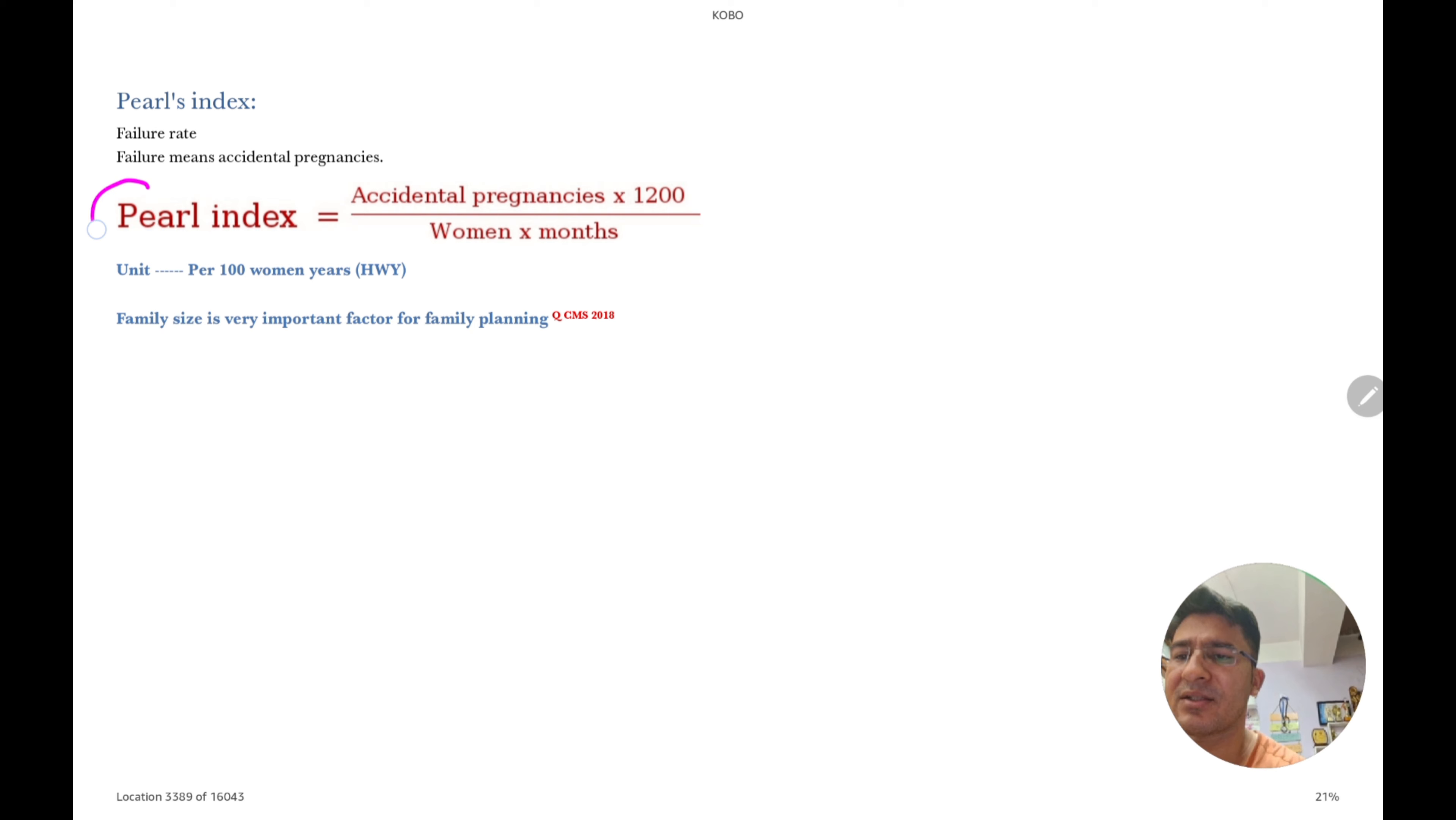Now what is pearl index? Chhota sa topic hai. Generally contraception ke failure rate ko batata hai. So most commonly hum kya use karte? Pearl index to assess or for the efficacy of contraception failure. To answer is life table. Abhi baad mein sab likha hua hai. So pearl index ko log define karte hai per hundred women year. Question puchta hai kaise define karte hai? So answer is per hundred women year. Family size is very important for family planning.